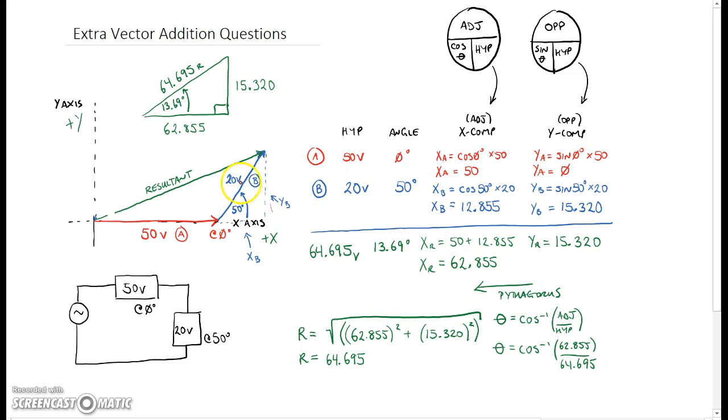So my first vector has a hypotenuse of 50 volts, the angle is zero degrees, and my second vector has a hypotenuse of 20 volts and the angle is 50 degrees. So what I need to do is I need to add up the x components of either one of them - you can see that they are on the same plane so I can add them together. Then I have to find the y components of both and add them together.